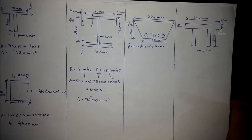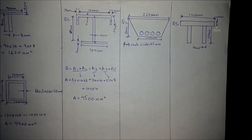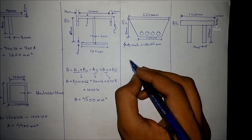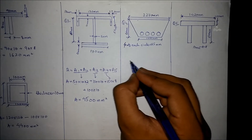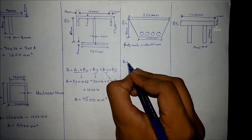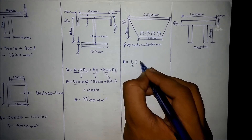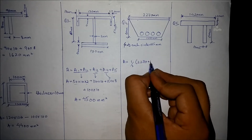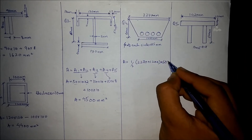The fourth question gives us a box girder — a cross section of a bridge commonly seen in concrete bridges, mainly in Asian countries. The area of the trapezoid is calculated as half multiplied by the sum of the longer dimension (2270mm) plus the shorter dimension (1200mm), multiplied by the height of 600mm.